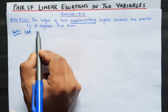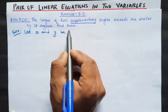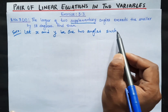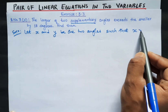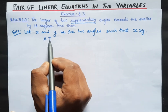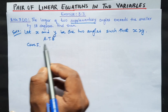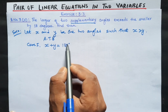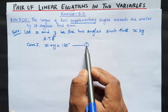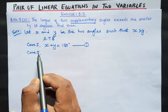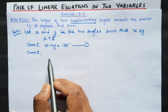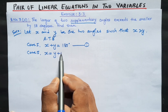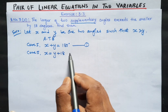Let x and y be the two supplementary angles, where x is greater than y. According to the question, case 1: the two angles are supplementary, so x plus y is equal to 180 degrees. This is equation number 1. Case 2: the larger of the two angles exceeds the smaller by 18 degrees. So the larger angle x equals the smaller angle y plus 18. This is our equation number 2.